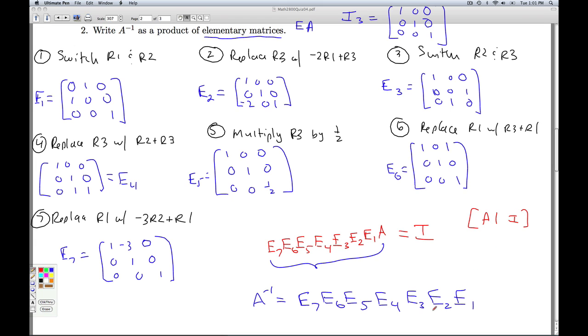Okay, so it's a good exercise to multiply these out in this order, from E1 up to E7. So multiply them that way, and then see how that corresponds to what you did on the right-hand side. That'll do it for number two.